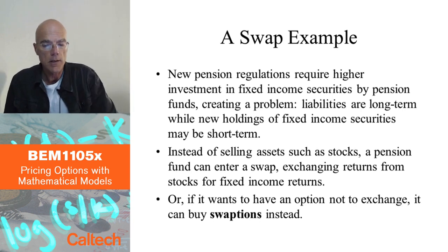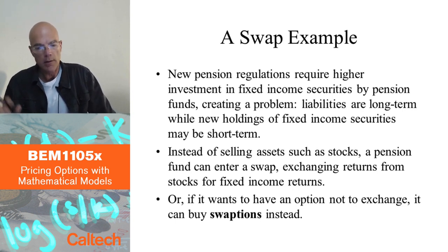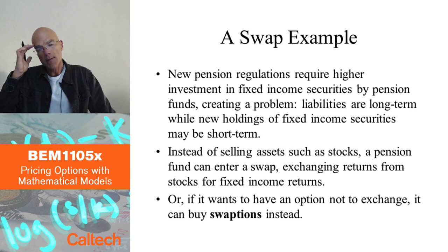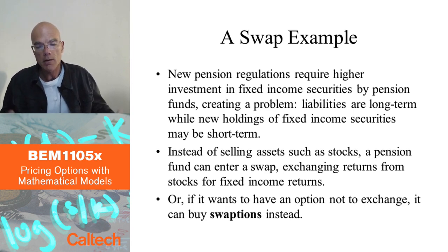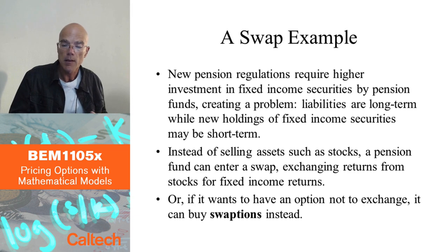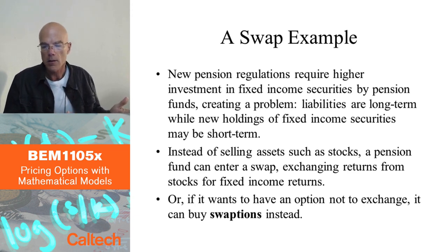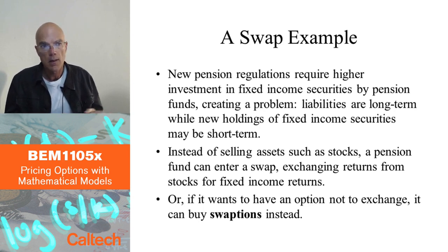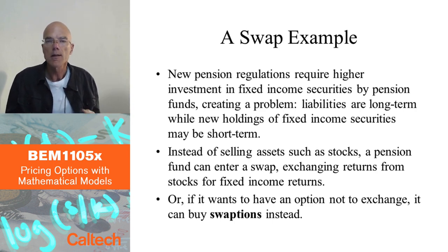Here's a real-world example from some years ago for a certain country in which new pension regulations were introduced requiring pension funds to hold a higher portion of their investments in fixed income securities — somewhat safer instruments — as opposed to stocks and equities. This creates problems if your stock holdings are currently low in value and you would take losses if you sell them, or you actually want those stocks long term and would rather not sell.